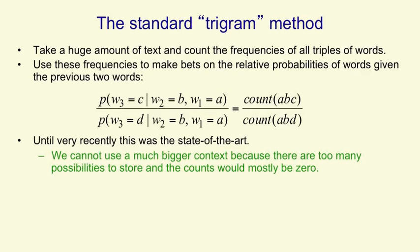We can't use much bigger contexts than two previous words because there are just too many possibilities to store, and if we did use bigger contexts the counts would be mostly zero. Even for two word contexts there's many contexts that you will never have heard. For example if I say dinosaur pizza, that's probably a string of two words that you've never heard before.